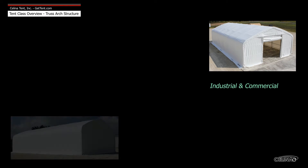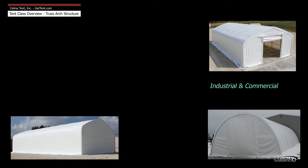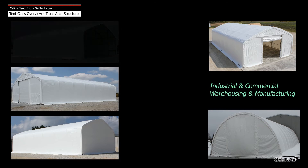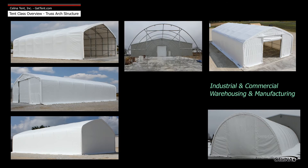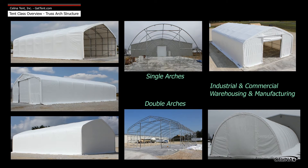Truss arch structures are mainly used for industrial and commercial applications such as warehousing and manufacturing space. Individual design may utilize single or double arches, with walls that are vertical or also arched in design.